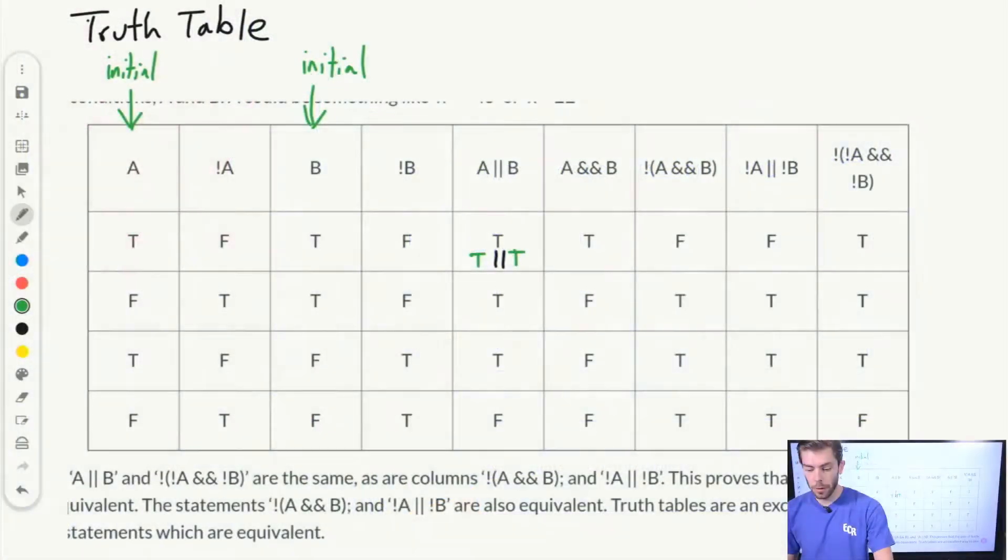Let's take a look at the AND column. So in the AND column, we see that we have essentially the inverse. Only the top row here is TRUE because A and B both have to be TRUE in their initial states in order for this entire expression to evaluate to TRUE.